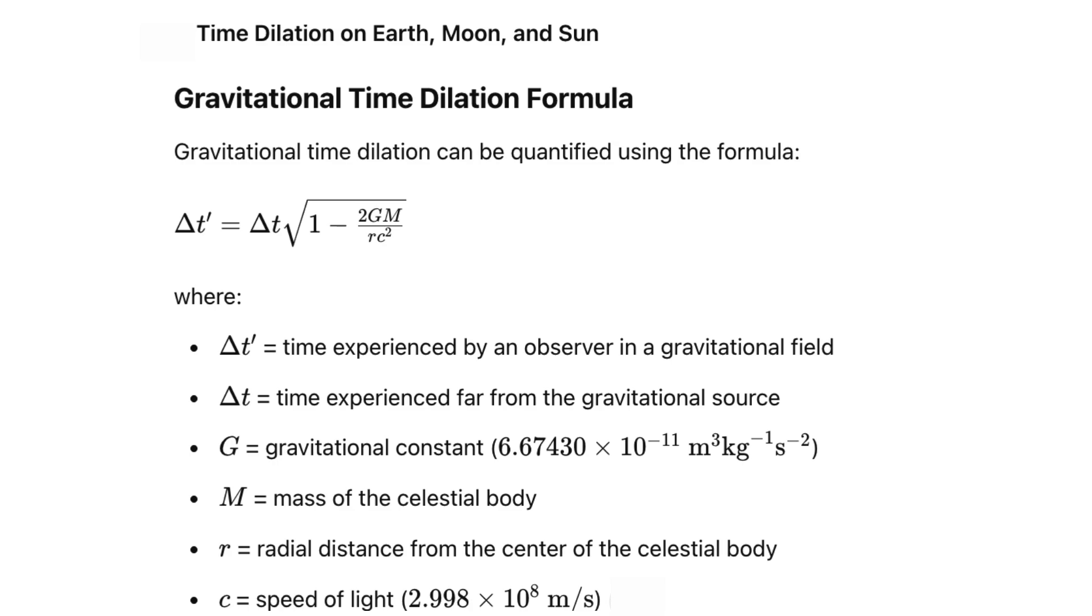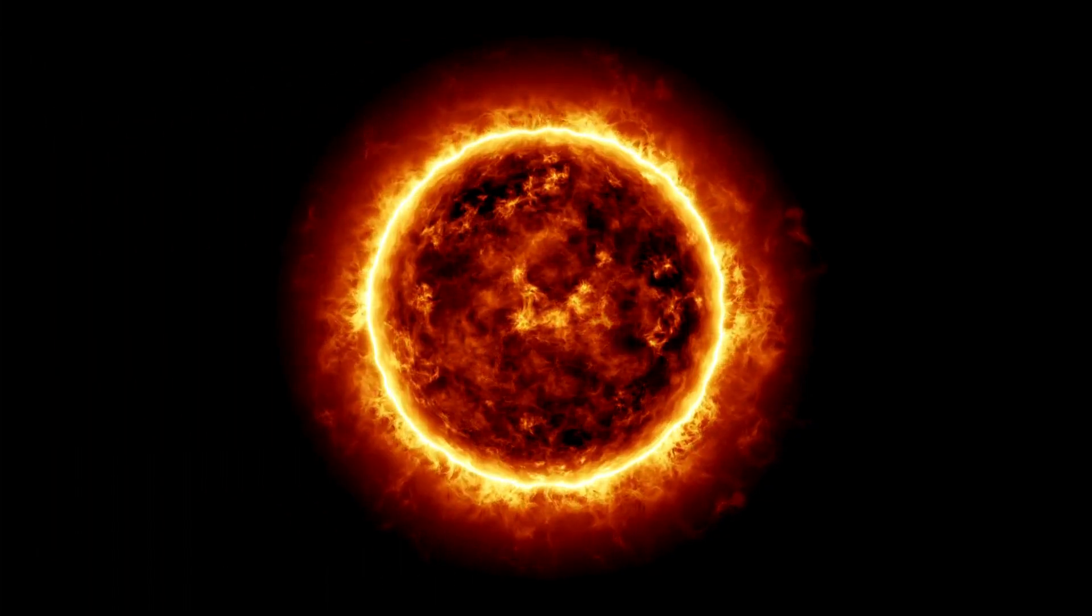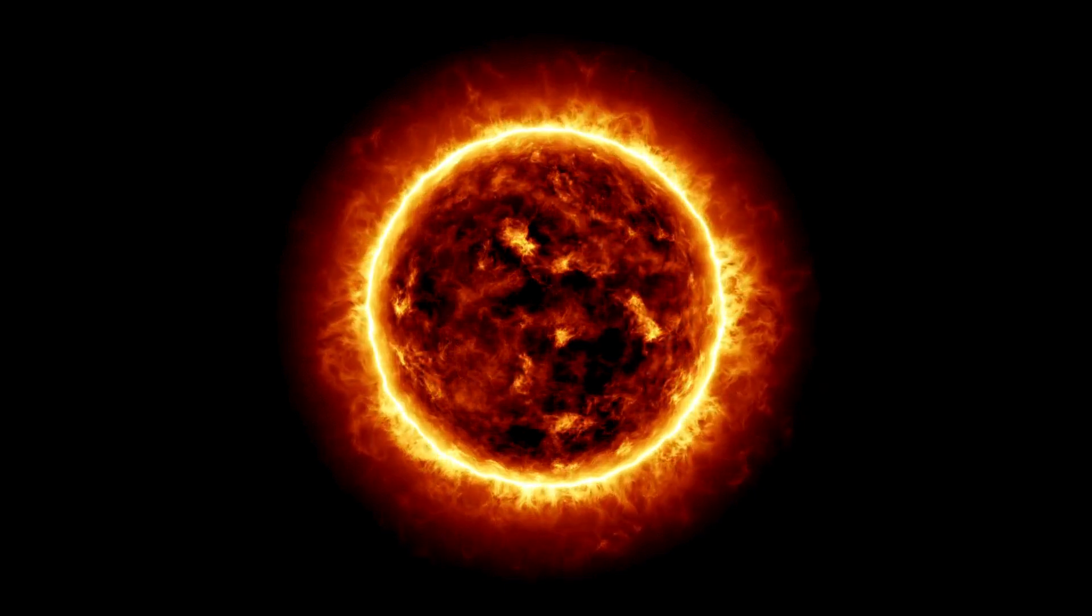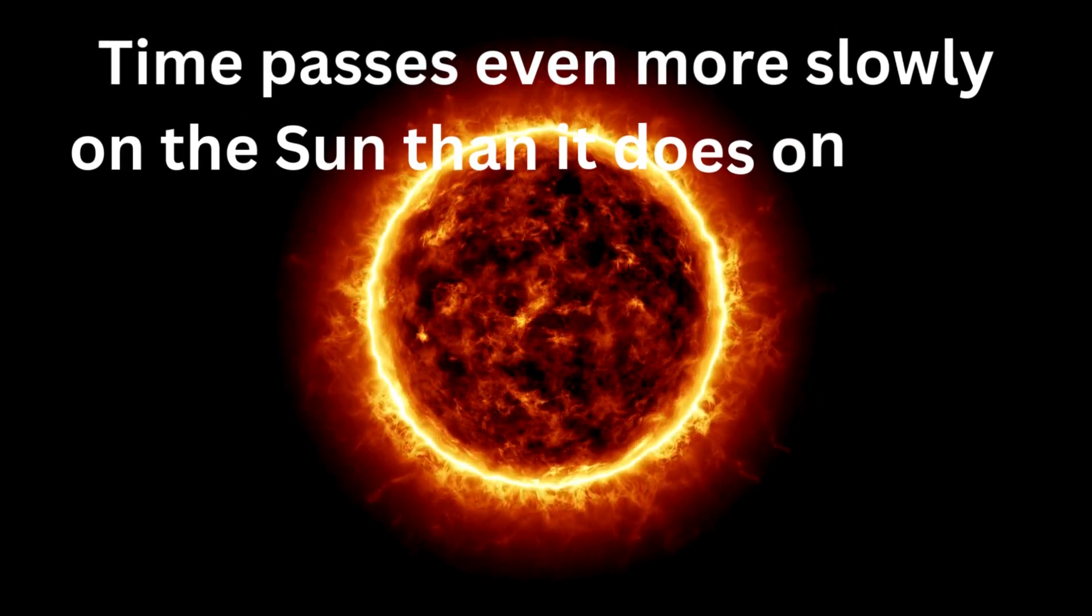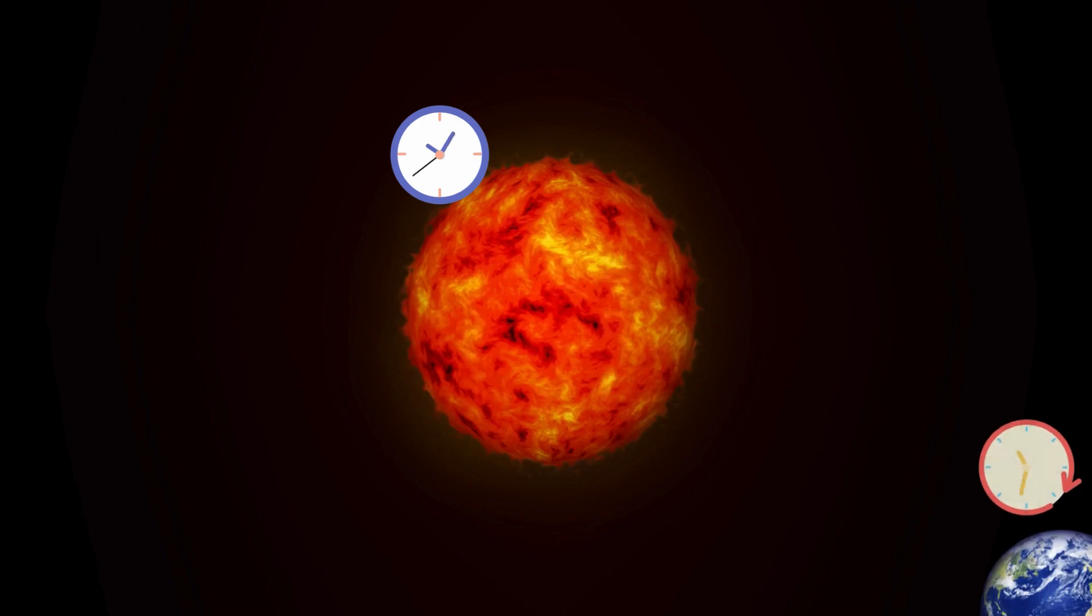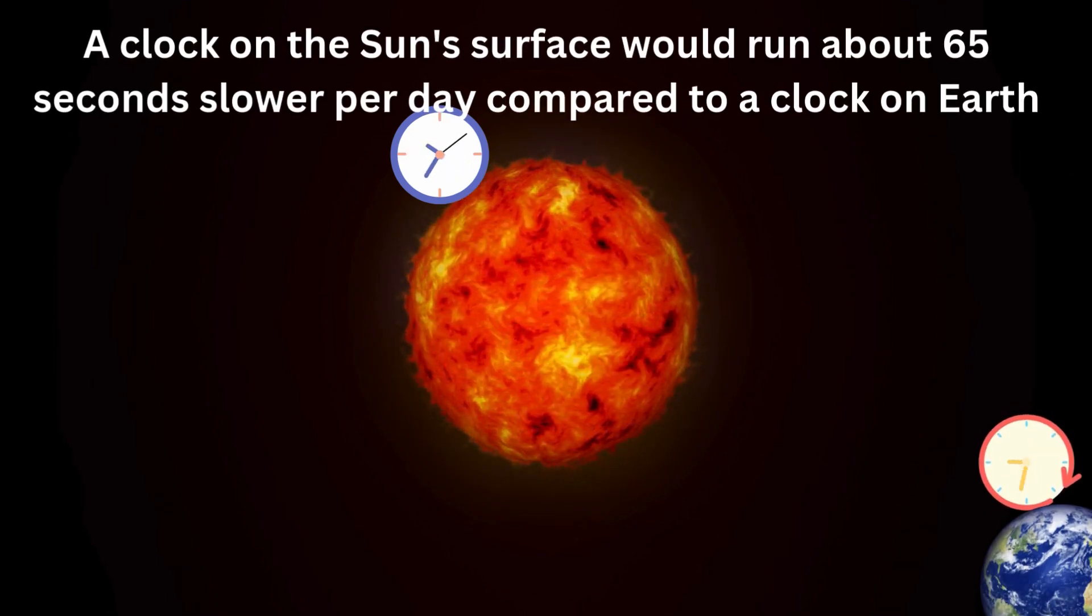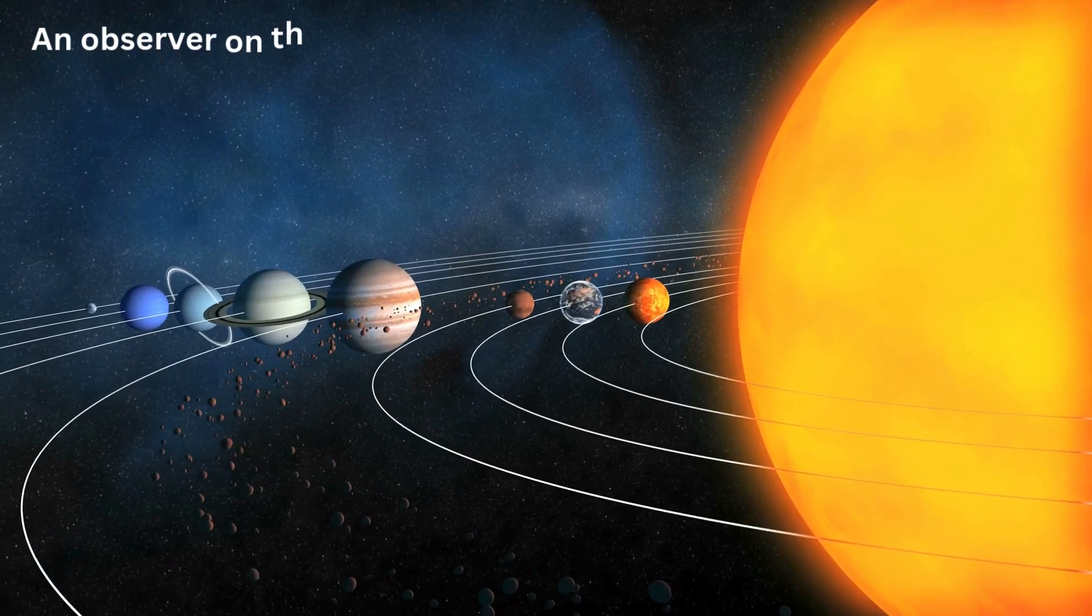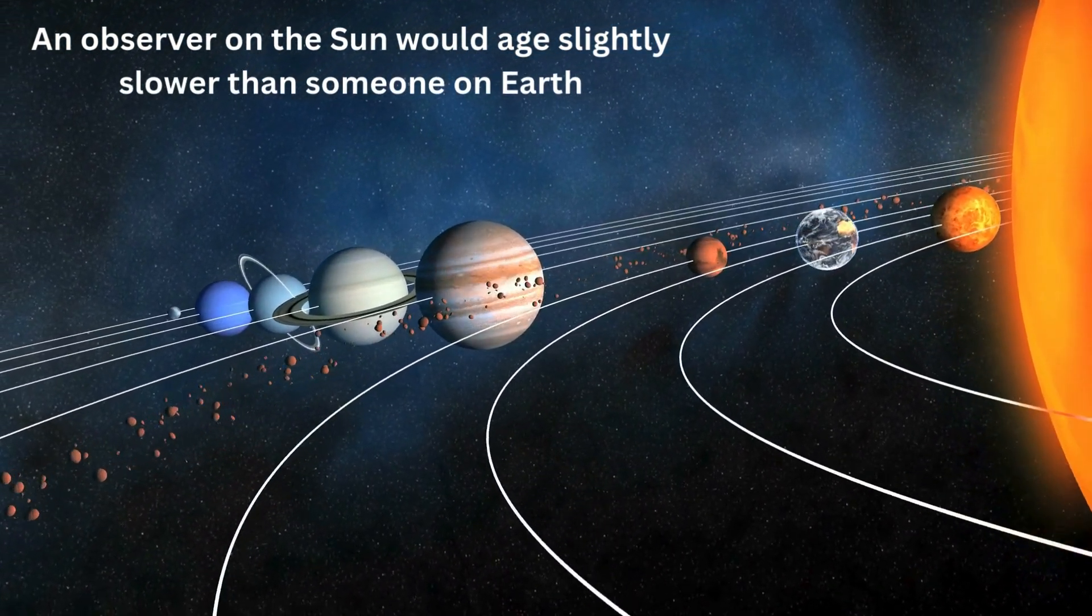Time dilation due to gravity. To quantify this, we use the gravitational time dilation formula. Using this formula, we can see that time dilates more strongly near the sun compared to Earth due to the sun's much greater mass. Thus, time passes even more slowly on the sun than it does on Earth. Using Einstein's equations, we can calculate that a clock on the sun's surface would run about 65 seconds slower per day compared to a clock on Earth. This means that an observer on the sun would age slightly slower than someone on Earth.